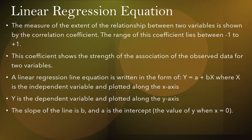The linear regression equation is very important. The measure of the extent of the relationship between two variables is shown by the correlation coefficient. The range of this coefficient lies between minus 1 and plus 1, and this coefficient shows the strength of the association of the observed data for two variables.